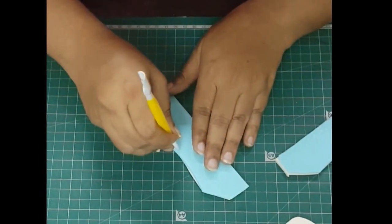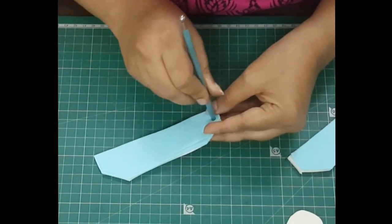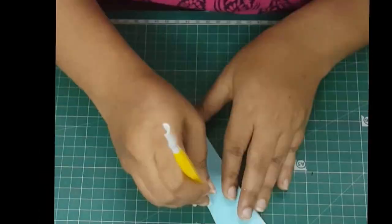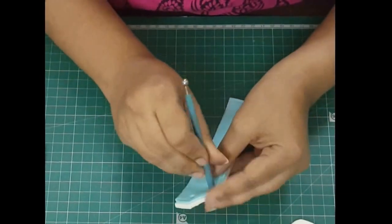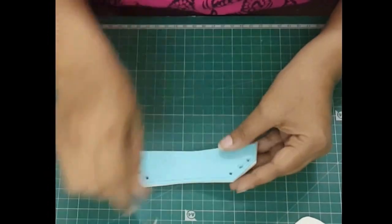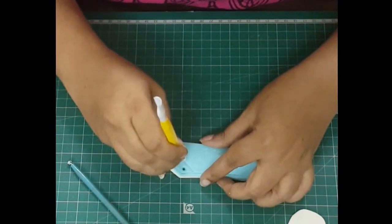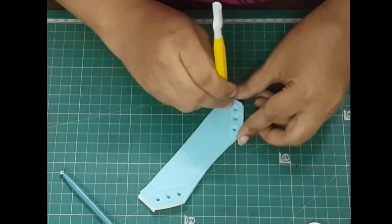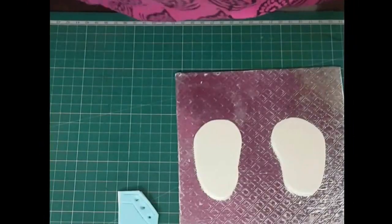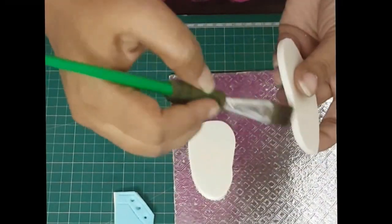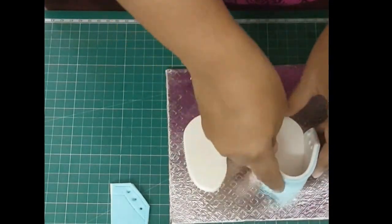Follow the template and mark out the stitches, and put three holes using a ball tool. Do it for both sides. Using edible glue, attach it to the sole of the shoes as shown.